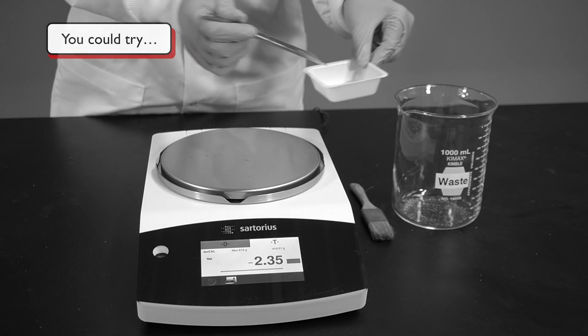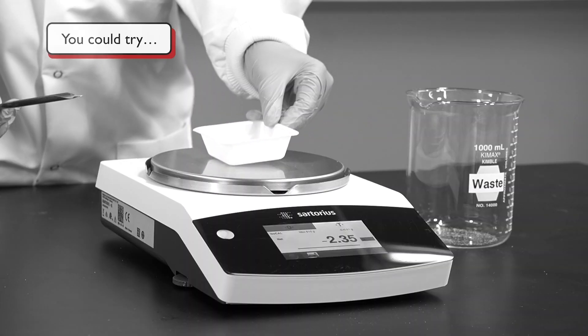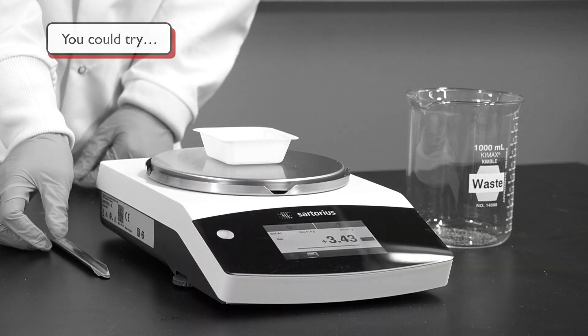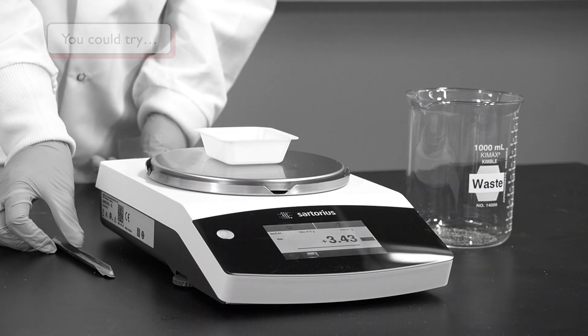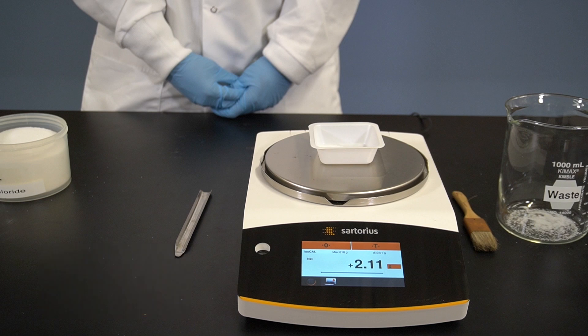Well, it depends. If you actually need 2.0 grams, then you should try to take out a little more solid to get to 2.0 grams. But it is very rare, at least in the setting of a general chemistry lab, that you will need 2.0 grams. So the correct answer is the third one.